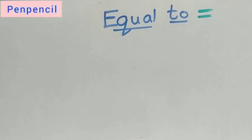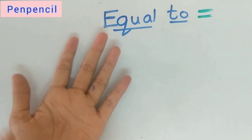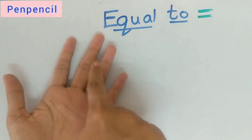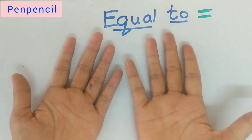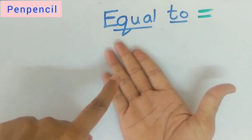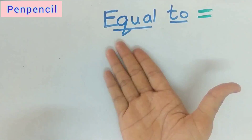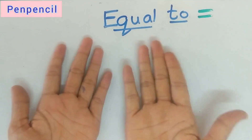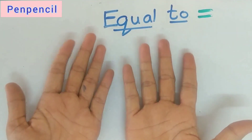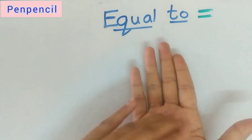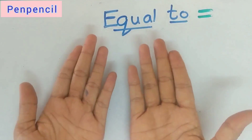One more thing we will take. Now your left hand is having 5 fingers: 1, 2, 3, 4, 5. Your right hand is also having 5. Let us count: 1, 2, 3, 4, 5. That means both the hands are having 5 fingers — here 5, here 5. So equal number of fingers in both the hands.